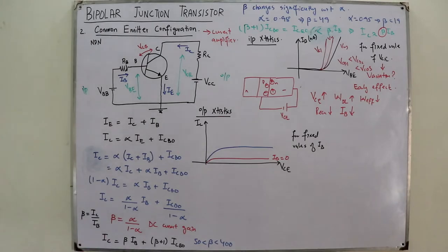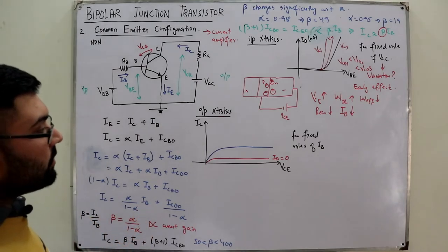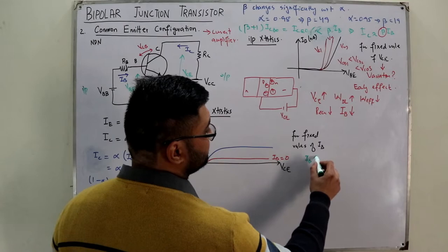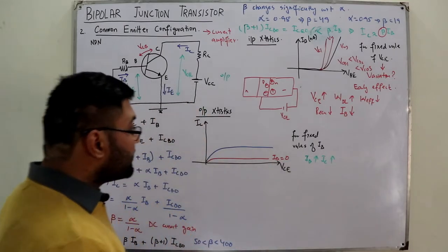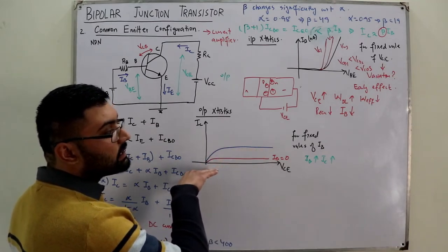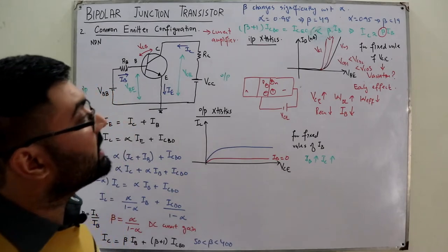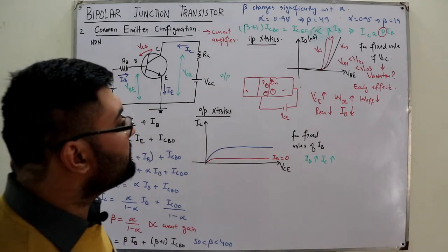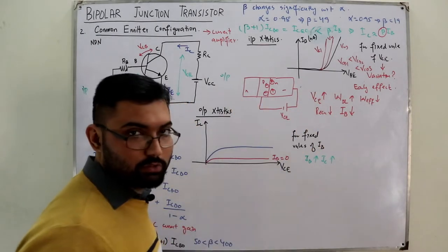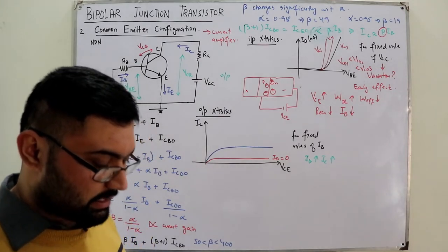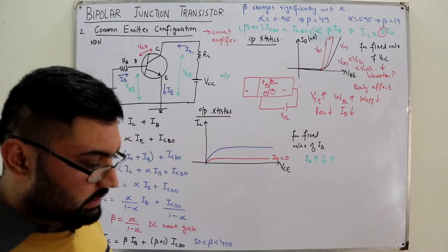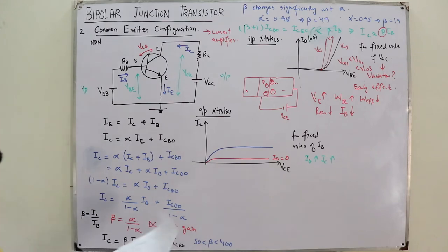If the Early effect is ignored, the curves are flat — IC = β·IB. But if the Early effect is included, increasing VCE reduces IB, which in turn reduces IC slightly, giving the output curves a slight positive slope. So the Early effect causes IC to increase slightly with VCE.